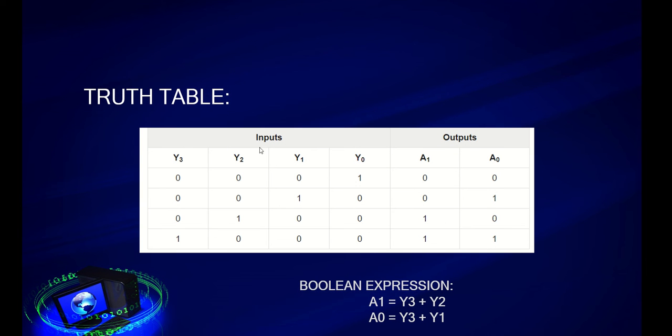The truth table is given here. The boolean expression is a1 is equal to y3 plus y2, a0 is equal to y3 plus y1. There is no use of y0 in the boolean expression, so the circuit doesn't contain y0.